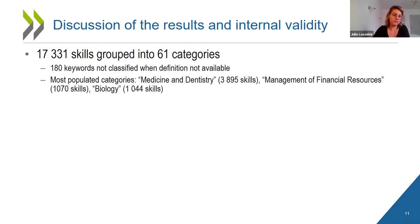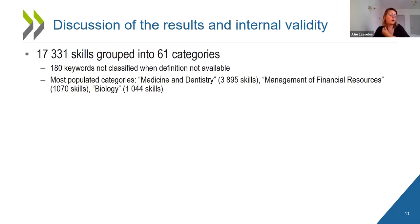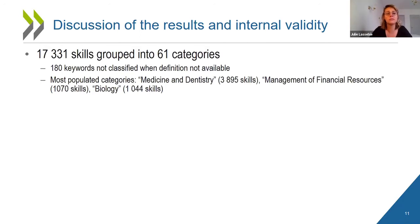Applying this algorithm to our list of keywords from Burning Glass, we are able to classify 17,331 skills into the 61 categories. A little under 200 keywords could not be classified because definitions were not available. The most populated categories are medicine and dentistry, management of financial resources, and biology.